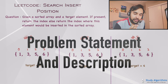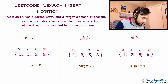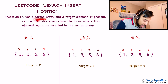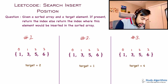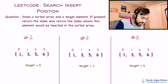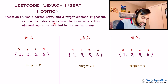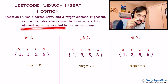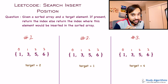Let us first make sure we understand the problem statement correctly. We are given a sorted array and a target element. If this target element is present in the array, we need to return its index. Otherwise, we need to return the index where this element would be inserted in the sorted array. Let us quickly look at some test cases to understand what that actually means.